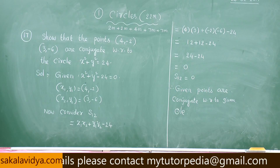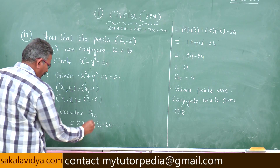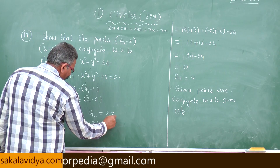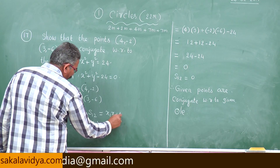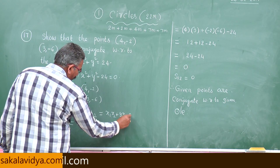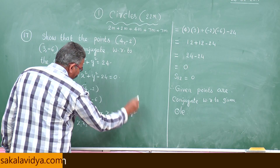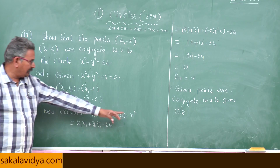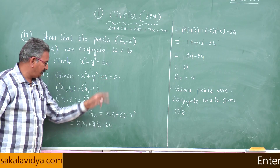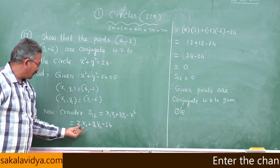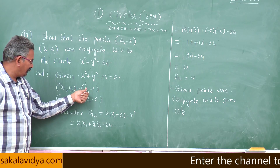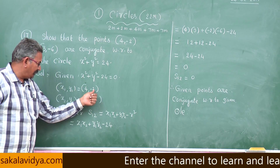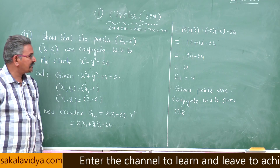Here, s₁₂ means x₁x₂ + y₁y₂ - r². Here r² means 24. We replace: x₁ = 4, x₂ = 3, y₁ = -2, y₂ = -6, and we get the result as shown.